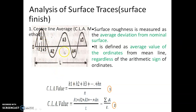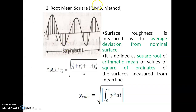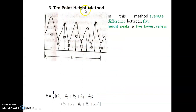Over the whole surface, you measure all the peaks and valleys and the Ra value is determined. Then there is Rq — root mean square — where the root of all the values is calculated. It is called root mean square. Then there is the ten-point average method, called Rz, in which five peaks and five valleys are taken and their average is calculated.